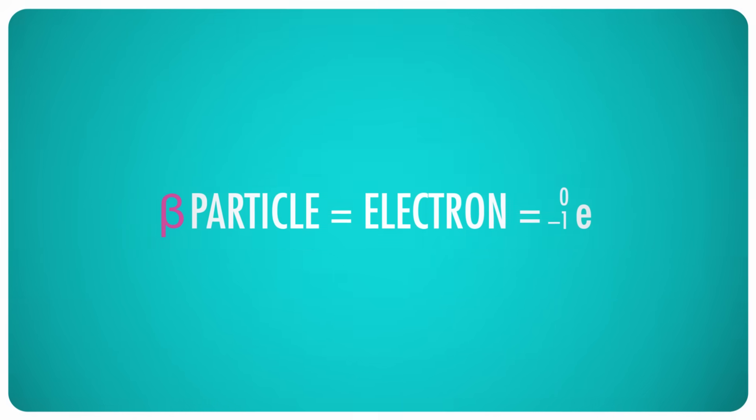The second type of radioactive decay is beta decay, which simply emits electrons. It has somewhat higher energy than alpha radiation, but it can still be stopped by a sheet of aluminum foil or even the top layers of your skin.